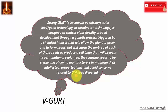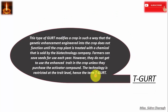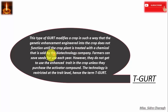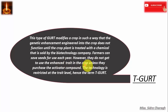In trait-based technology, this technology modifies crops in such a way that the genetic enhancement engineered into the crop does not function until the crop plant is treated with a chemical sold by the biotechnology company. Farmers can save the seed for use each year; however, they do not get to use the enhanced trait in the crop unless they purchase the activator compound from the company. So this technology is restricted at the trait level.